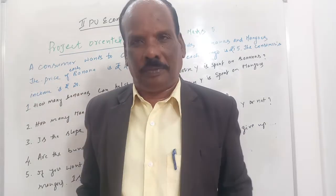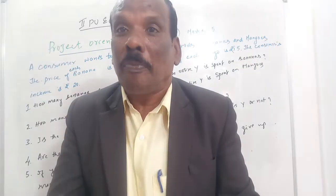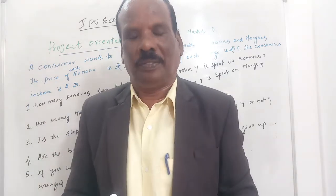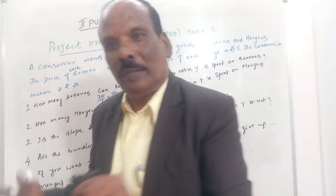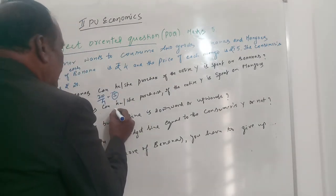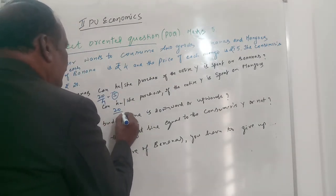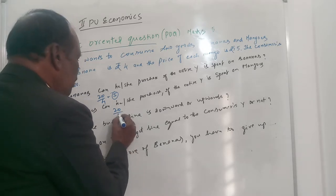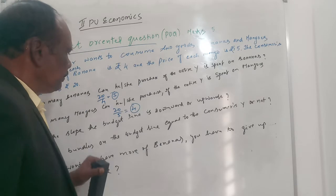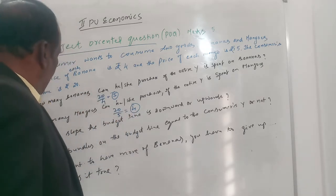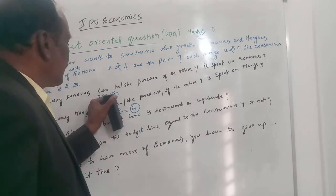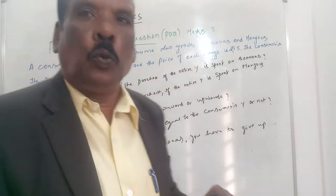If the entire income is spent on the purchase of mangoes, how many mangoes can the consumer purchase? Very simple. Income is 20 and the price of mango is 5, so the consumer can purchase 4 mangoes. The answer is 4 for question number 2 and 5 for question number 1.